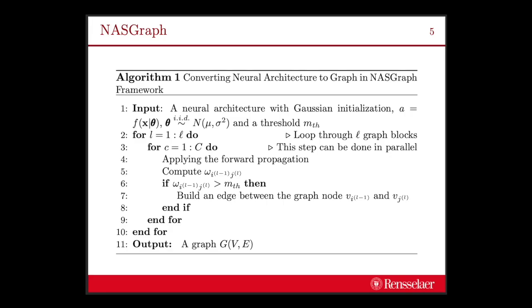So formally, the input for the NAS graph framework is a neural architecture where the weights are randomly initialized, and there is a hyperparameter to control the threshold. We loop through every graph block and activate the channel one by one. For each channel, we compute the score to determine if there will be an edge between graph node Vi and Vj, or if there's no edge between these two nodes. At the end of the day, we can obtain a graph. This graph has a one-to-one correspondence to the given neural architecture. Then we compute the graph properties or graph layers and use those graph layers to do the NAS.